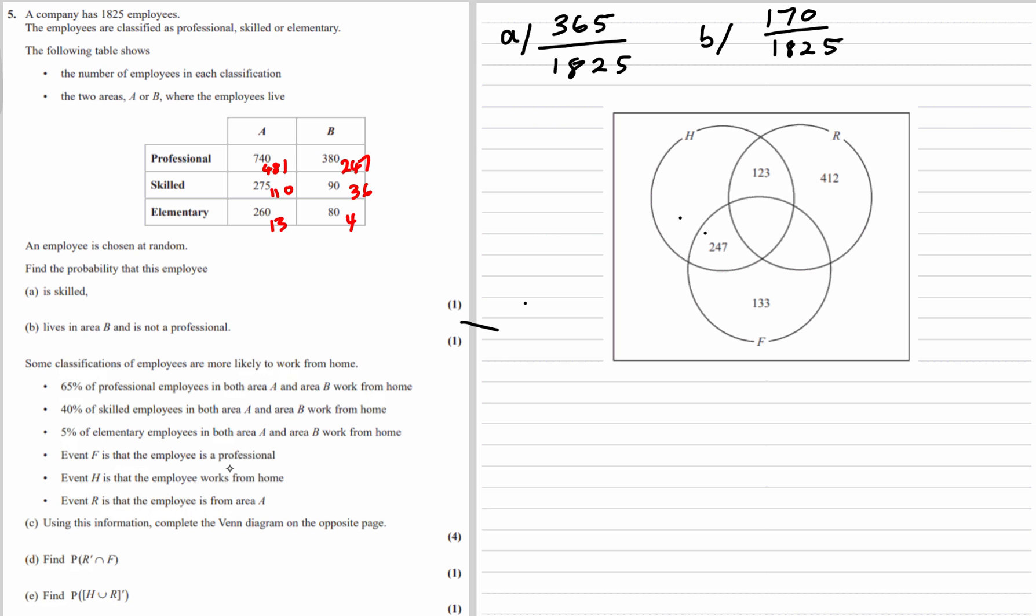So event F, F is professional. H is work from home. So H is work from home, F is professional, and R is area A.